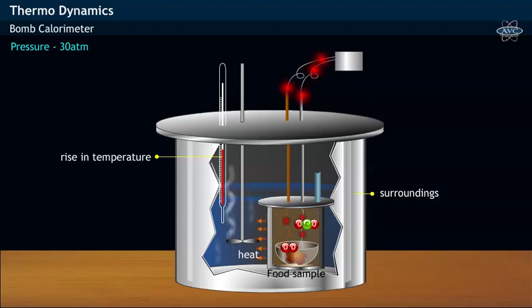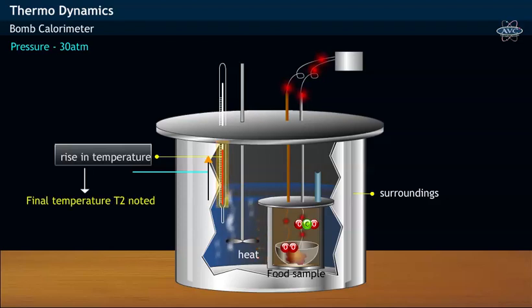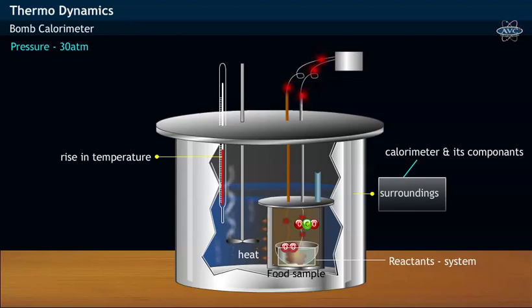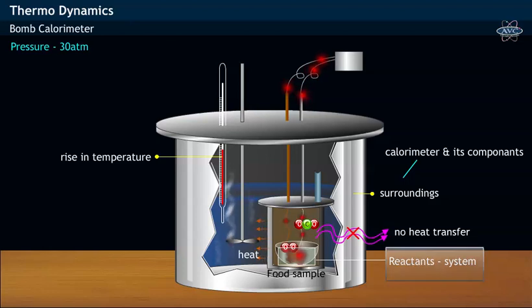This heated water increases the temperature, which may be noticed by the rise in mercury level of the thermometer. The final temperature is noted down. In the calorimeter, the reactants placed in the bomb act as the system, while the surroundings are constituted by the calorimeter and its components—that is, bomb, water, vessel, etc. In this process, no heat transfer occurs from system to surroundings.